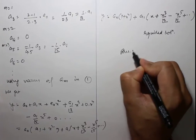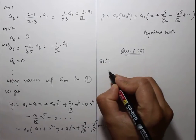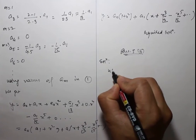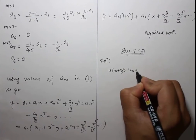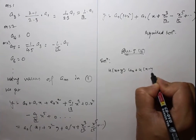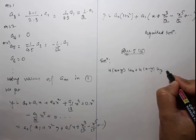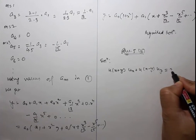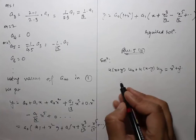Question 5, Part B. Find the solution of the quasi-linear partial differential equation: (u + x + y)u_x + (u + x - y)u_y = x² + y².